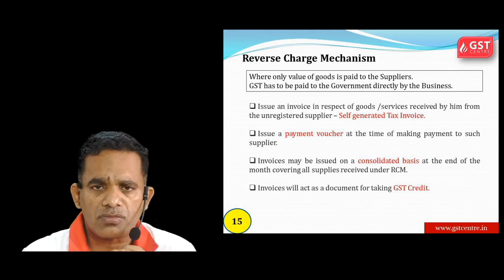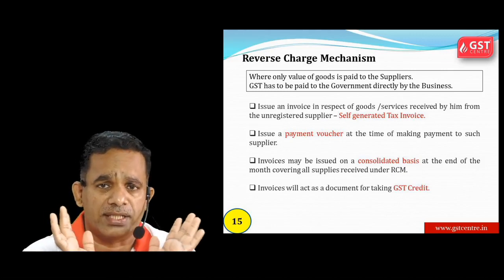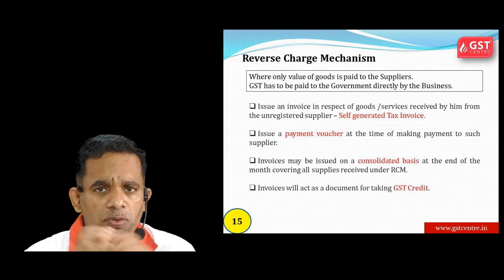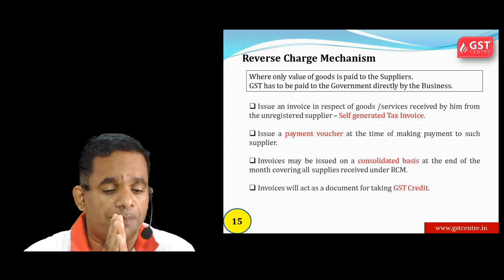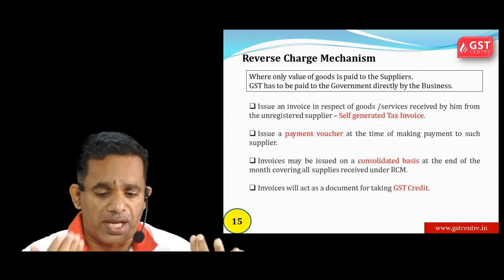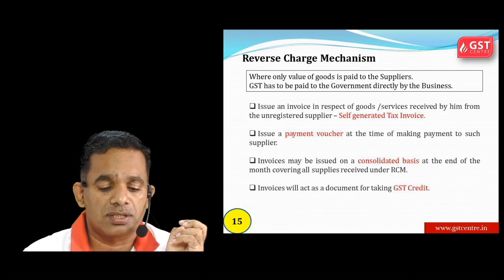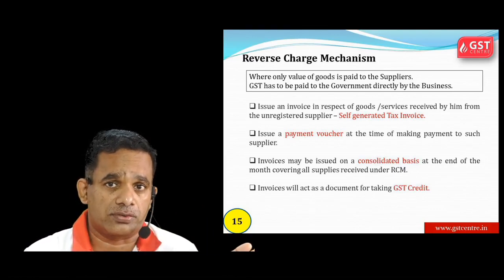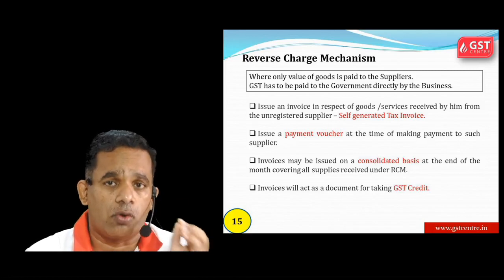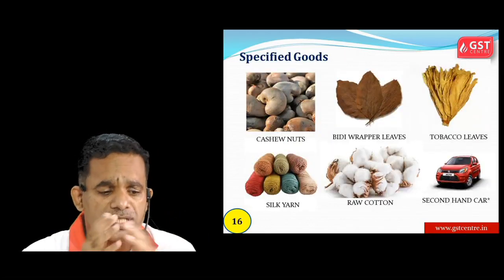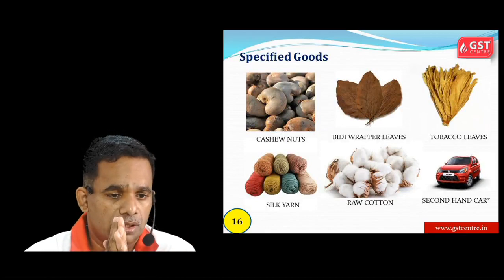In reverse charge mechanism, the supplier gives price/goods/services to receiver, but the buyer must pay GST to the government and issue a self-generated tax invoice. Invoices can be on a consolidated basis. After GST payment by receiver, the receiver can claim input tax credit for the GST paid under reverse charge mechanism.